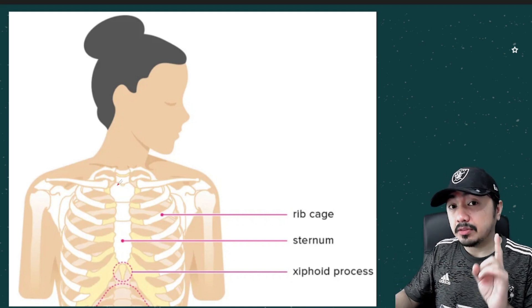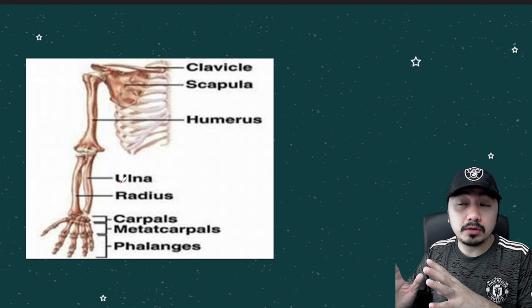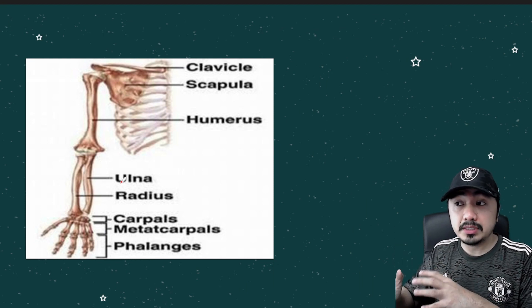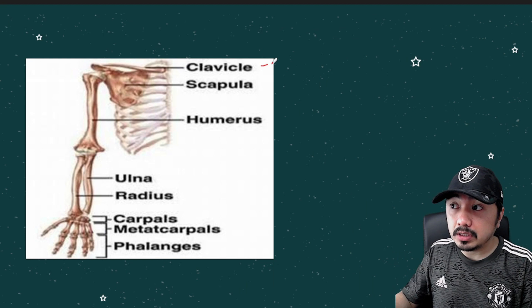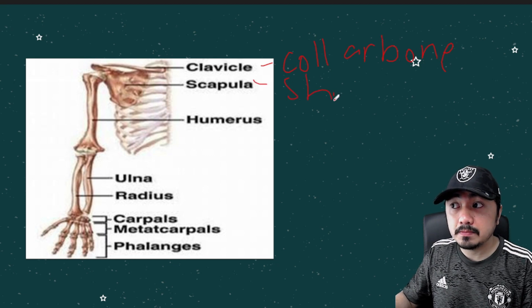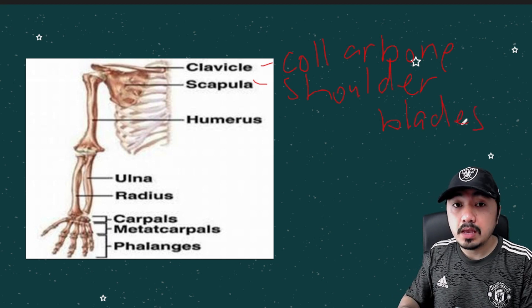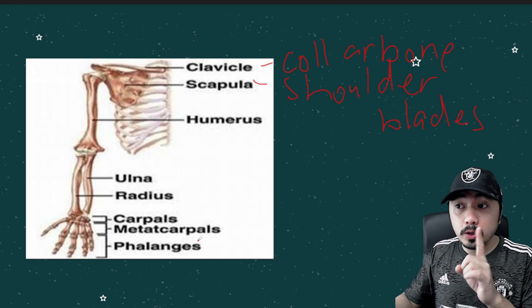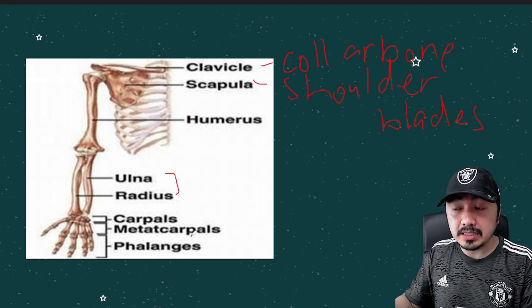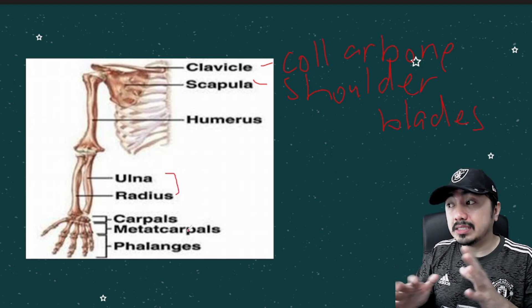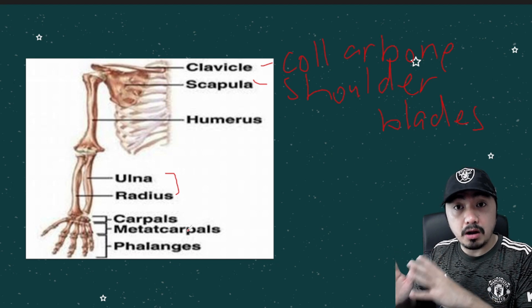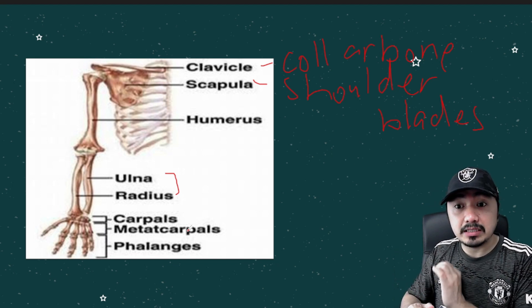Next are the bones of the upper extremity. The shoulder region consists of the upper end of the humerus, the clavicle (also called the collarbone), and the scapula (also known as the shoulder blade). The humerus is the upper arm bone. The ulna and radius make up the forearm section. We also have the bones of the wrist and hand: the carpals, metacarpals, and phalanges in the distal portion.